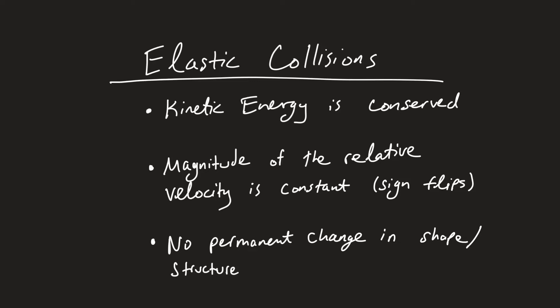In this video we're going to go over elastic collisions. Number one, by definition, kinetic energy is conserved — the amount of kinetic energy in our system before the collision will be equal to the amount after the collision. Next, the magnitude of the relative velocity is constant; it's just that the sign of the relative velocity flips. We'll review what relative velocity is and how to calculate it. And then finally, more physically, there's no permanent change in shape or structure.